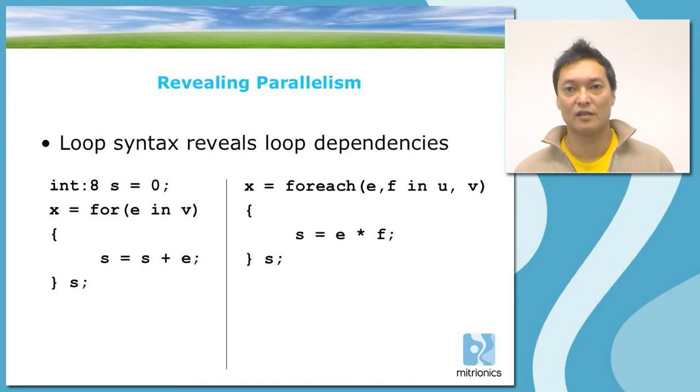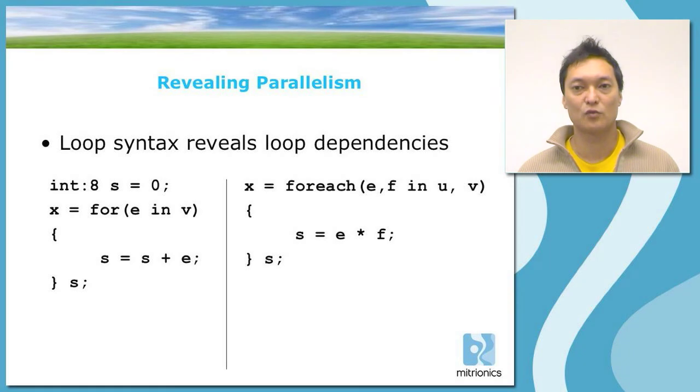In Mitrion C, the two different loops have a syntactic requirement on the existence or non-existence of loop dependencies. So you cannot write a for loop unless there is a loop dependency in your algorithm. In this way, the syntax actually reveals the parallelism to the programmer in itself.